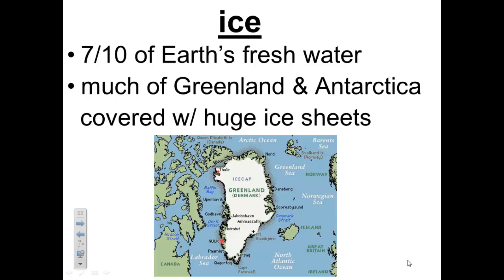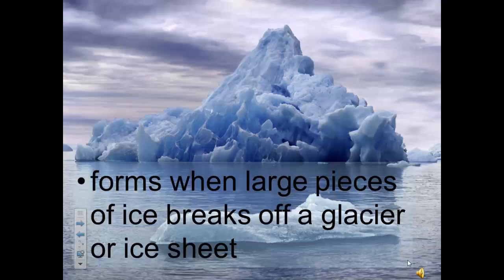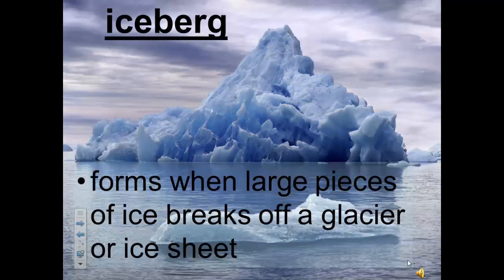Glaciers and ice sheets are large areas of ice. Valley glaciers are found in the valleys of high mountains and are long stretches of ice that flow slowly downhill. As valley glaciers and ice sheets flow, they crush and move rock, changing the shape of the land. Glaciers and ice sheets form when each year's snowfall is greater than the amount that melts, and the weight of new snow squeezes the snow into ice. In places where glaciers and ice sheets reach the ocean, large pieces of ice can break off, and these floating pieces of ice are called icebergs.